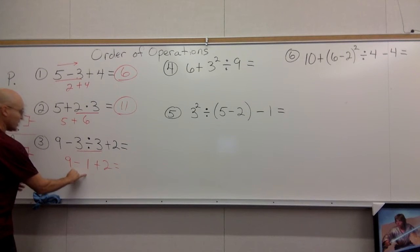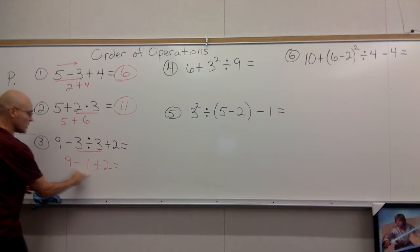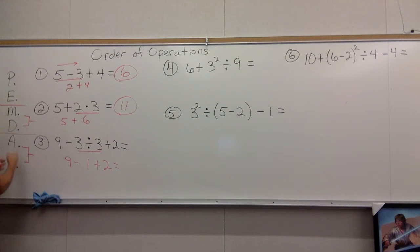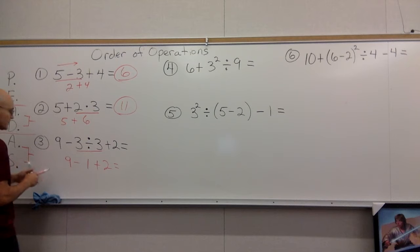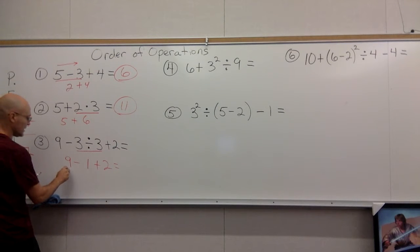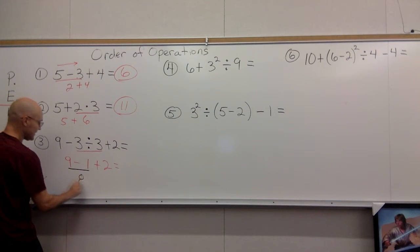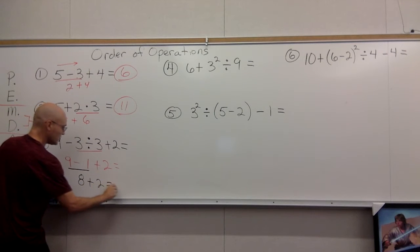Now you got 9 - 1 + 2. The thing you should do next is subtract because it's on the left. Subtract and addition are right here at the bottom of PEMDAS and they go left to right. So 9 - 1 is 8, and 8 + 2 gives you the answer of 10.